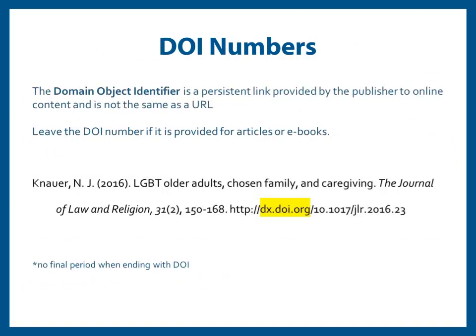DOI, or domain object identifier, is a link provided by a publisher and is slightly different from a URL. For APA, the DOI is always included if provided — the DOI includes 'DOI' as part of the link path. Only include a URL for content that is only accessible online, such as websites or social media. If a source is available in multiple formats, such as books, films, or journals, do not include a URL.